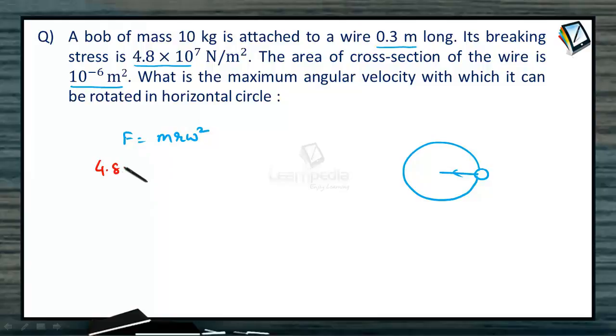So 4.8 × 10⁷ times the area of cross section 10⁻⁶ is equal to mass times 0.3 meters. So radius is 0.3 times omega square.